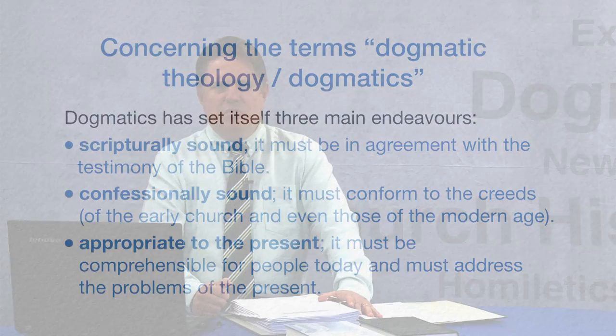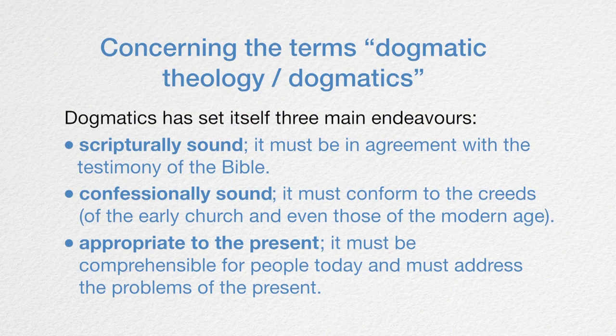There are some issues of dogmatics that are the tried and tested truths that come with us for centuries and also speak to us today. Dogmatics must also speak to developments happening in society today. So in summary, dogmatics has three main endeavors: it must be scripturally sound, it must be confessionally sound, and it must be appropriate to the present.